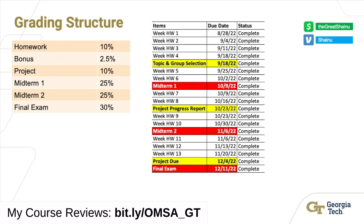So this is the grading structure of this course. You have homework at 10%, bonus at 2.5% of your overall grade, project at 10%, midterm one and midterm two at 25% each, and the final exam at 30%. So overall, you have the ability to earn 102.5% in this course. On the right side of the screen you can look at a breakdown of items along with the due dates.